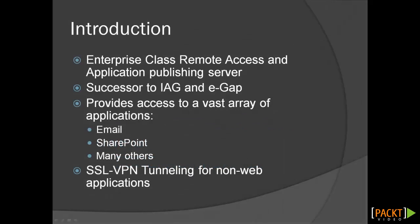UAG is Microsoft's enterprise-class remote access and application publishing server. It is a successor to IAG and EGAP and provides significantly enhanced functionality. With UAG, an organization can provide remote access to its employees to a vast range of applications and resources.